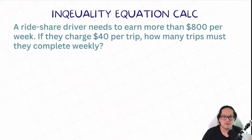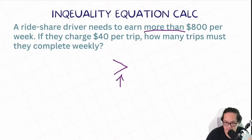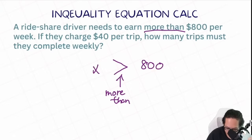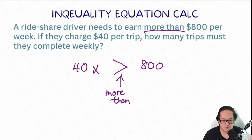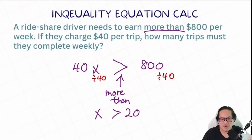Let's try another practice question. A ride-share driver needs to earn more than $800 per week. If they charge $40 per trip, how many trips must they complete weekly? 'More than' means the greater-than sign without the equal sign underneath. So we set up 40x greater than 800. Divide 40 on both sides: x is more than 20. The driver must do more than 20 trips to make more than $800.